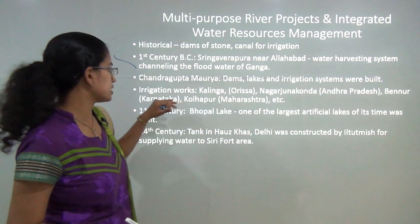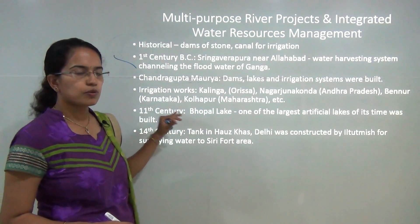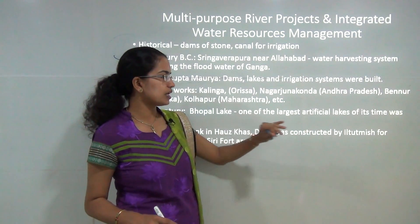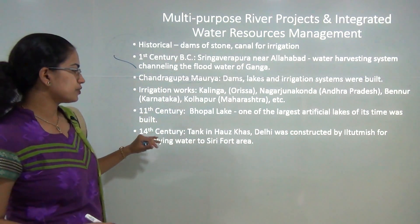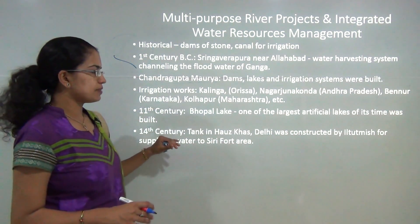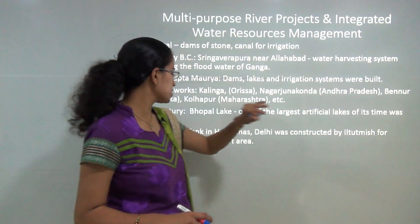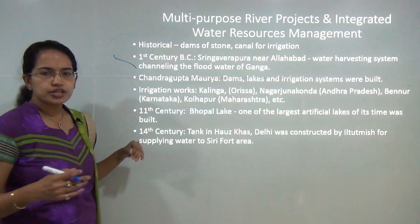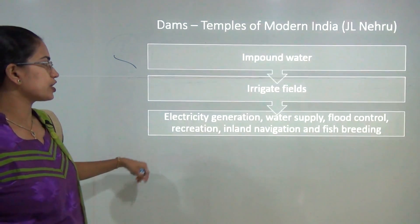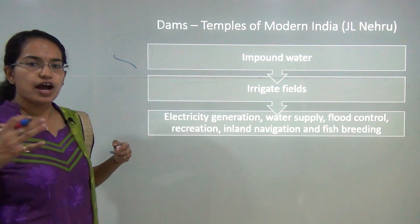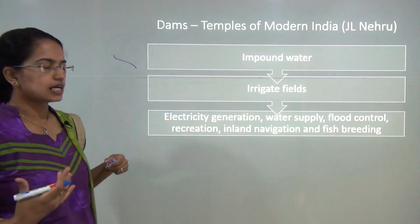Other historical examples include Benur in Karnataka and Kolhapur in Maharashtra. During the 11th century, Bhopal Lake was built — one of the largest artificial lakes of its time. During the 14th century, tanks were established in Hauz Khas, Delhi, by Iltutmish, who was supplying water to the Siri Fort area. These were some of the historical water management practices in India.